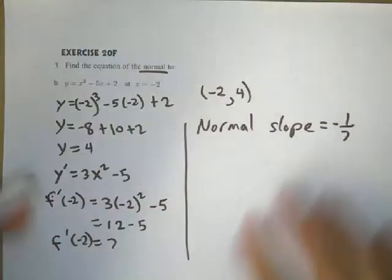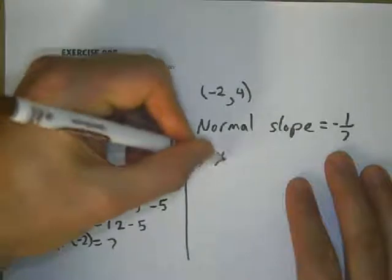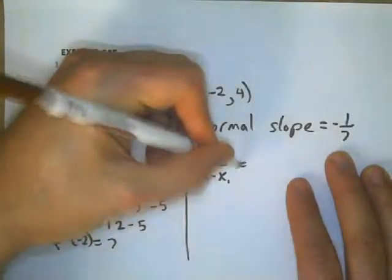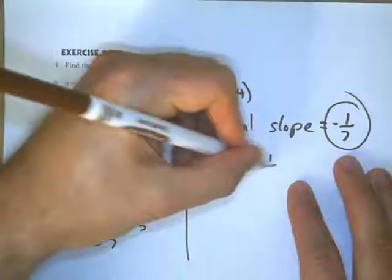Now we're going to use the formula we used before. Y minus y1 over x minus x1 equals our slope, which is negative 1 over 7.